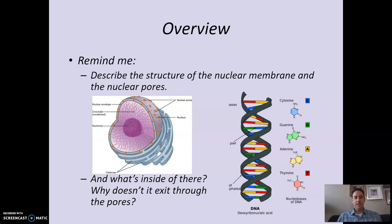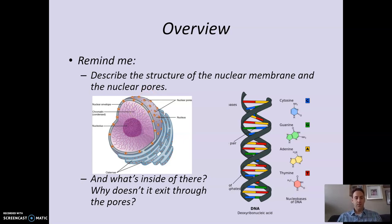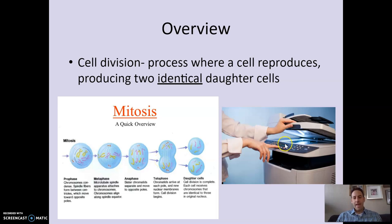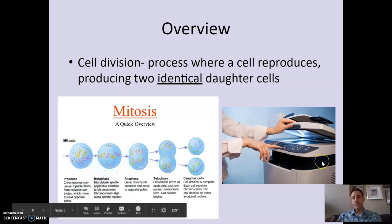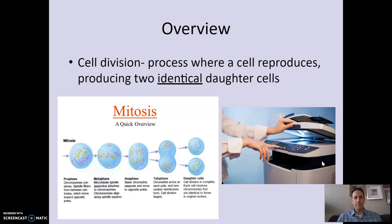We are beginning to look more closely at DNA with this first unit. So to begin — what is cell division? Cell division is the process where a cell reproduces, producing two identical daughter cells. If you've had bio before, these photos probably look familiar. If you haven't, think of it like a photocopier — we're making an identical copy of the cell.